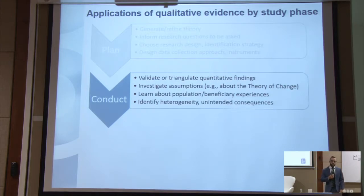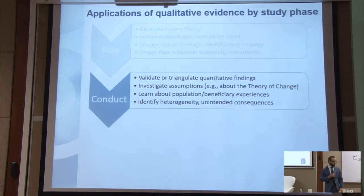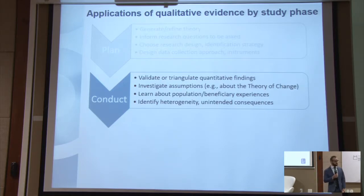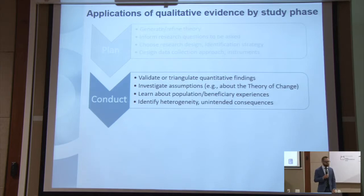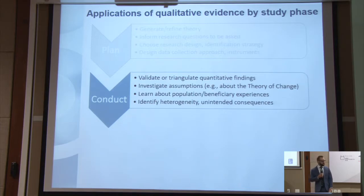Applications during the conduct or the implementation stage of the research: qualitative evidence can be used to validate or triangulate quantitative findings, to investigate assumptions about the theory of change, to learn about population and beneficiary experiences — something we've been talking about a lot at this symposium — and to identify heterogeneity or variations in the population and unintended consequences.